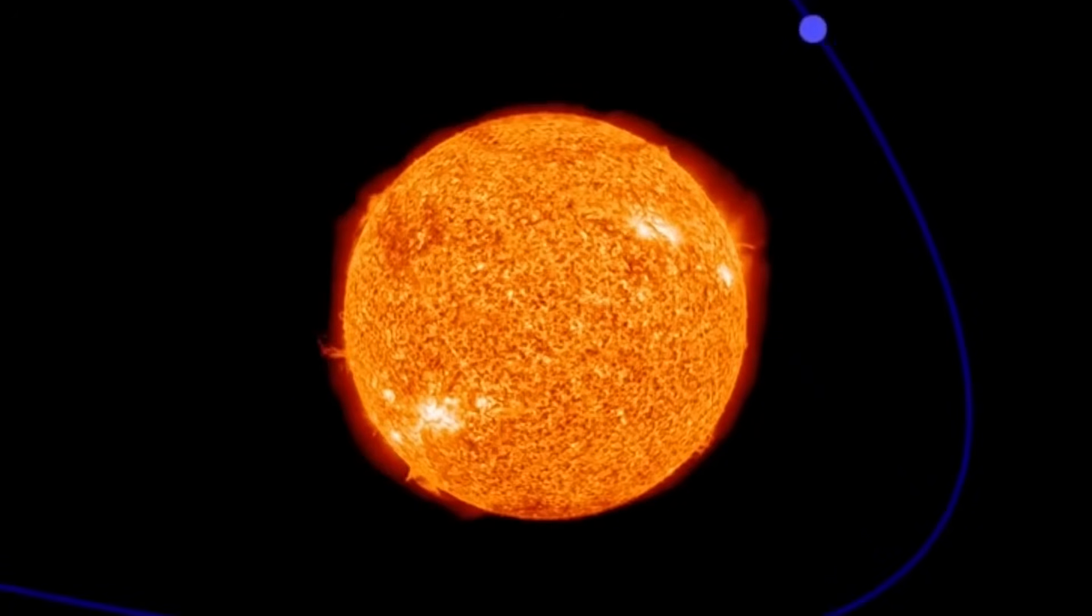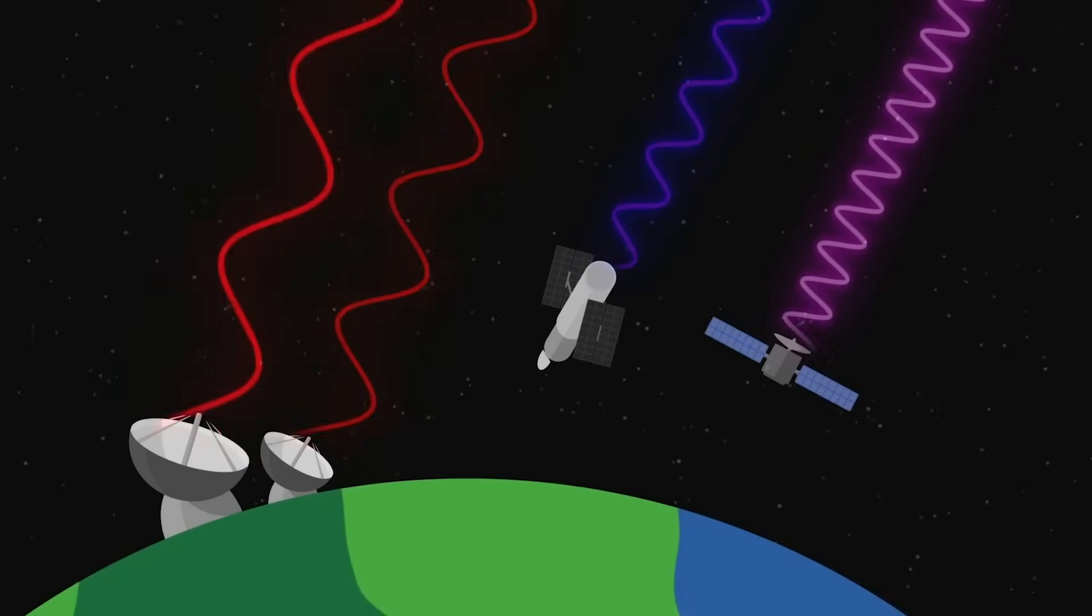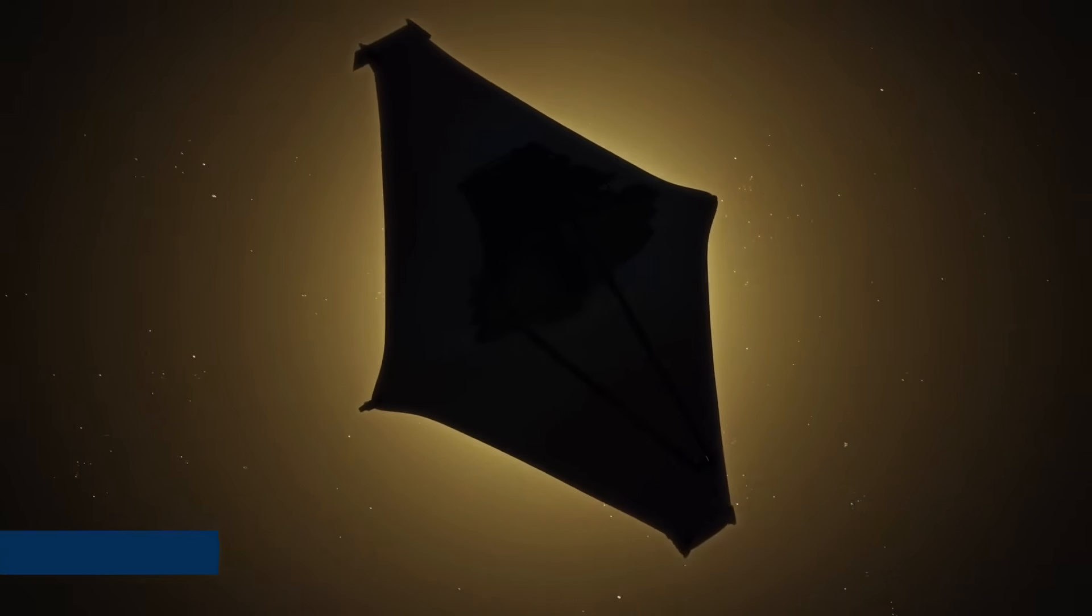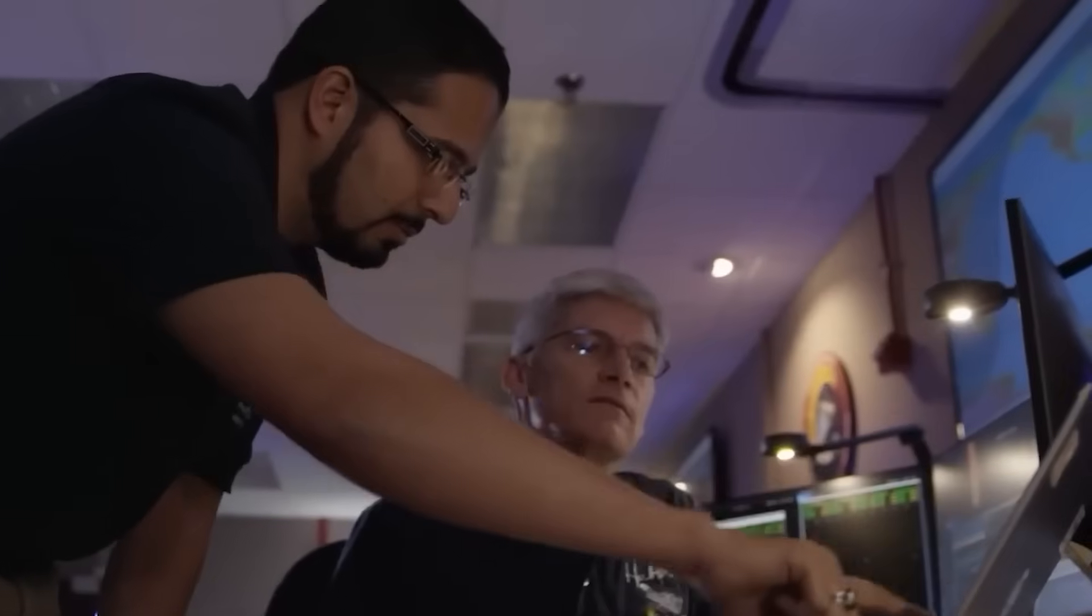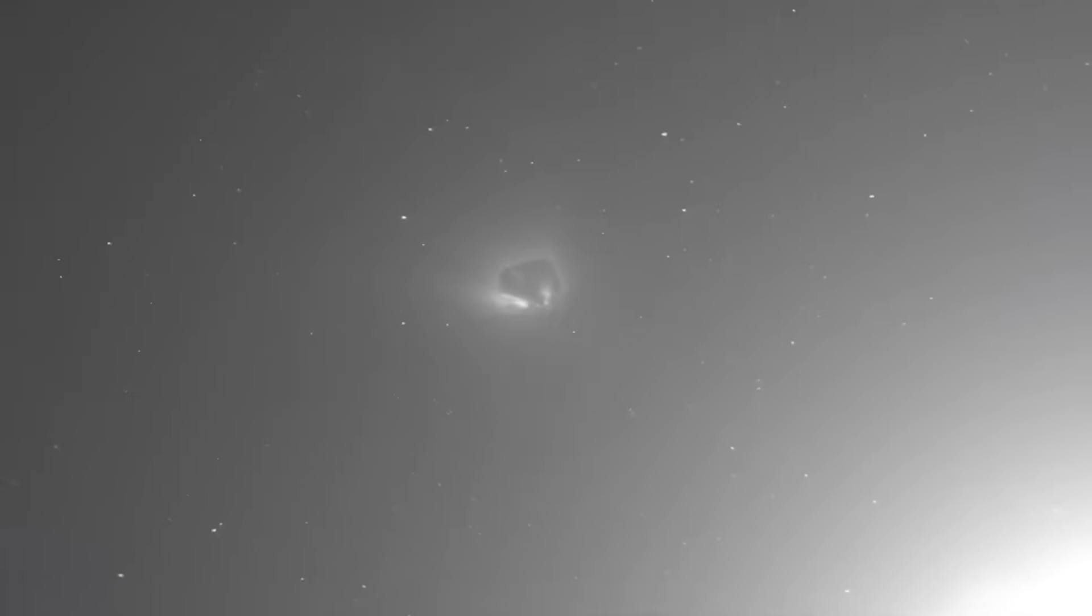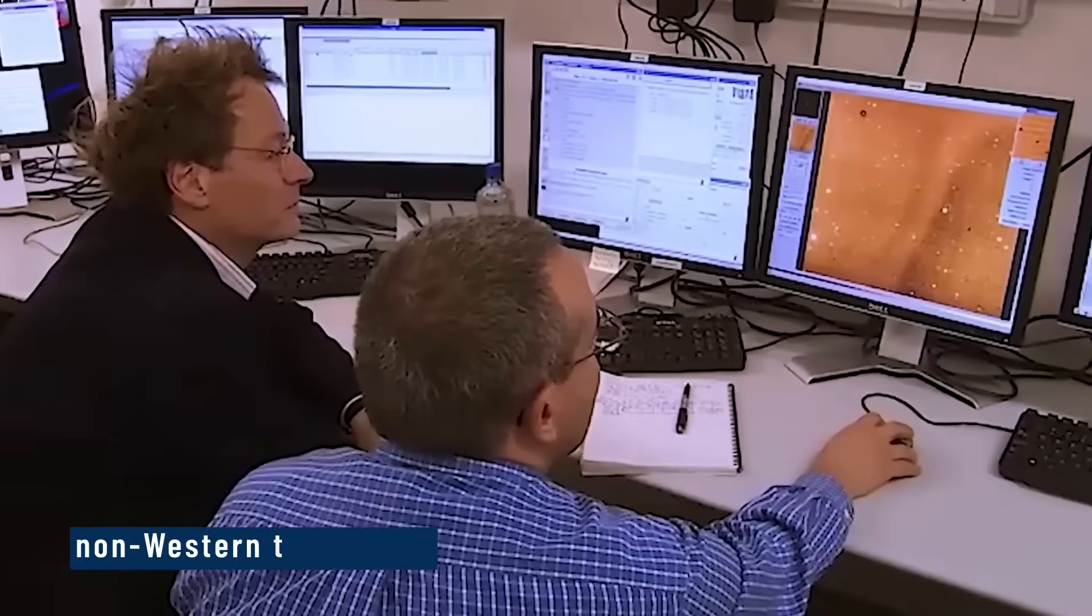But critics point to the slow trickle of high-resolution images, and the fact that other observatories, especially one in China, were the first to release what some called the clearest image. Add to that the object's faintness, its brief window of visibility, and the sheer difficulty in observing it. And it's easy to see how uncertainty breeds speculation. Is NASA hiding something? Or are they just struggling, like everyone else, to capture and decode a blur on the edge of certainty? Either way, the mystery only deepened once non-Western telescopes entered the conversation, and claimed a better look.